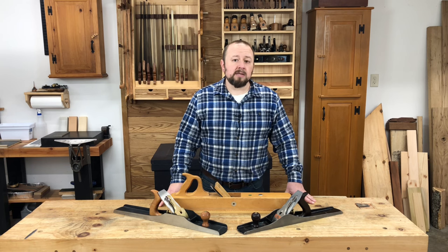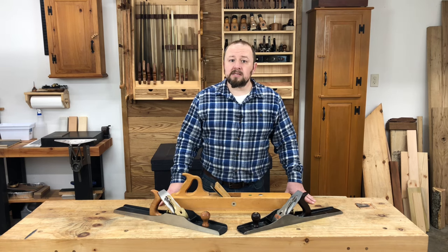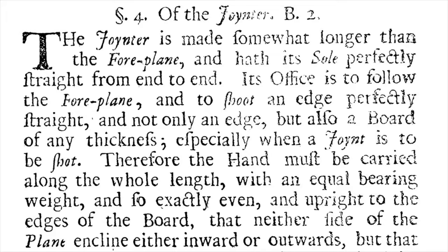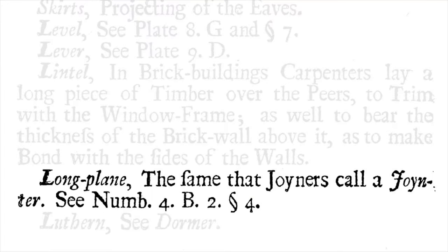Going back to Moxon, the earliest English-language version that we know of, he has this to say about the joiner plane: 'Of the jointer. Its office is to follow the foreplane and to shoot an edge perfectly straight, and not only an edge, but also a board of any thickness, especially when a joint is to be shot.' Moxon actually introduces a third plane, the long plane, in his section on house carpentry, and in that section he says: 'Long plane, the same that joiners call a jointer.'